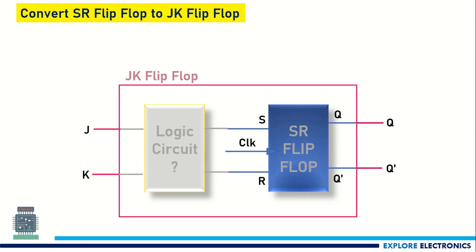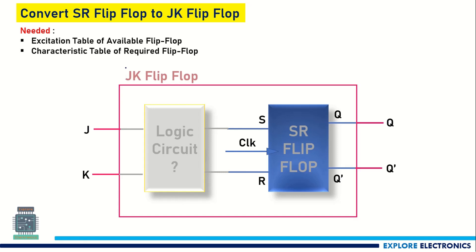To decide the extra logic circuit, we need to have an excitation table of the available flip-flop — which is SR flip-flop — and we need to have a characteristic table of the required flip-flop, which is JK flip-flop. So we need the excitation table of SR flip-flop and the characteristic table of JK flip-flop, then we can decide what logic circuit to put so that JK inputs are given through this logic circuit to the SR flip-flop and the output will be the JK flip-flop output. This is the overall idea of conversion.